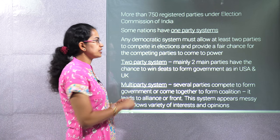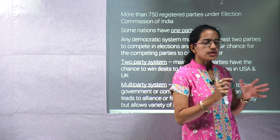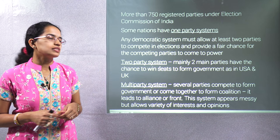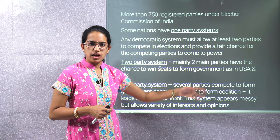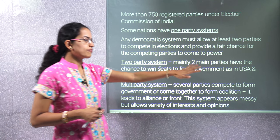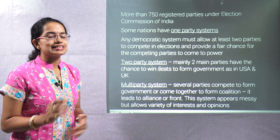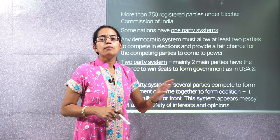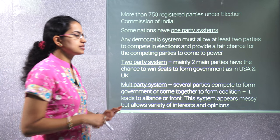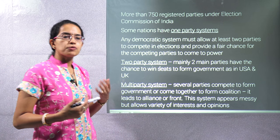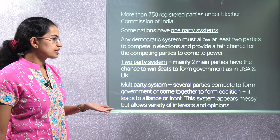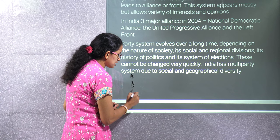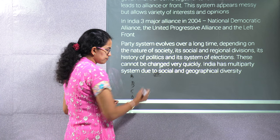Political parties can be of different types. In a one-party system, a single party exists and rules the country. In a two-party system, two major parties compete — for example, in the US you have Democrats and Republicans, and in the United Kingdom a similar pattern. India, however, follows a multi-party system, which provides a competing base for political parties.